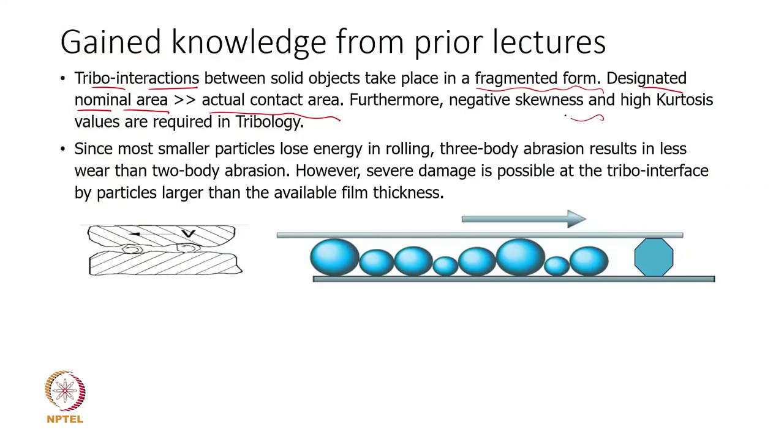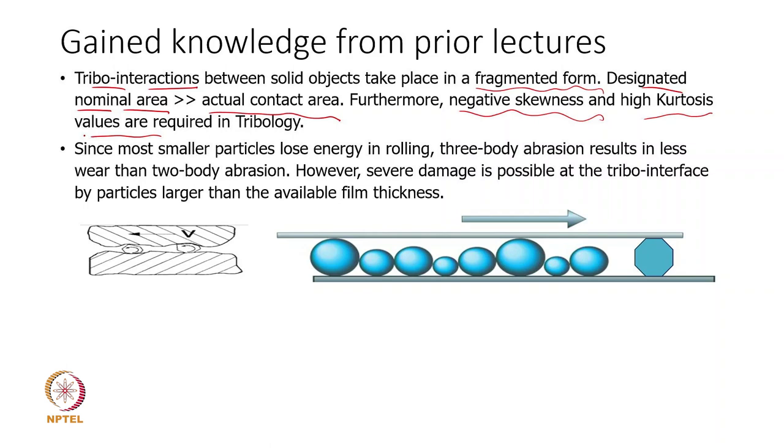We also learned that we require negative skewness — we do not want a normal distribution where skewness is 0. We want negative skewness and high kurtosis. Although people typically say kurtosis should be less than 3, here it can be more, because higher kurtosis means more peaks and more valleys. During running-in, peaks will be terminated or plastically/elastically deformed, and finally we get better negative skewness, which can then act as a reservoir for both debris and lubricant.